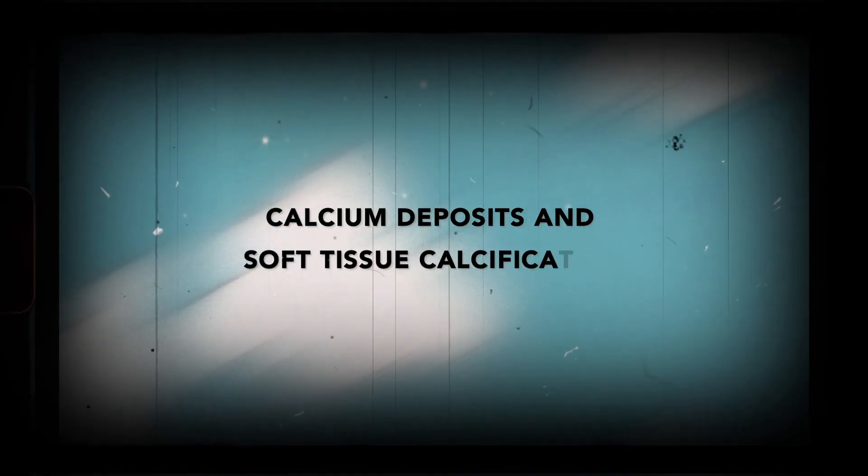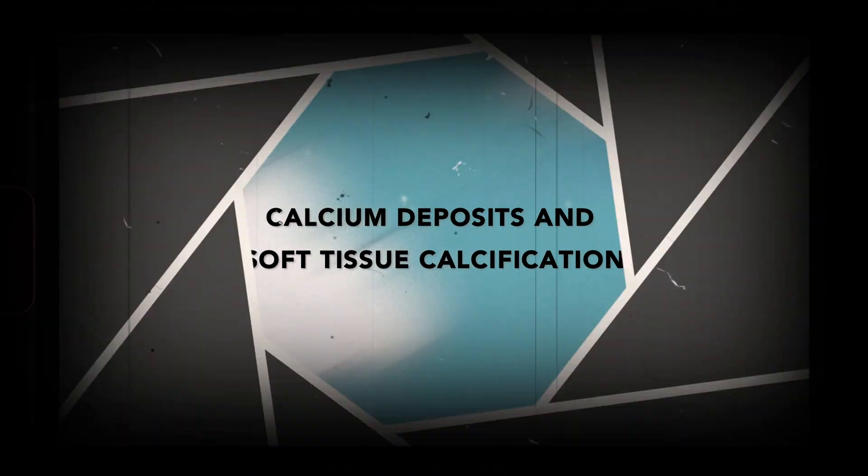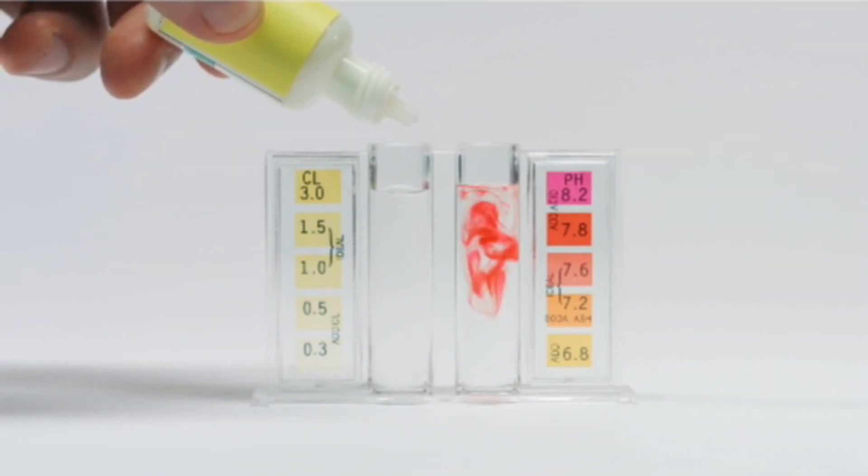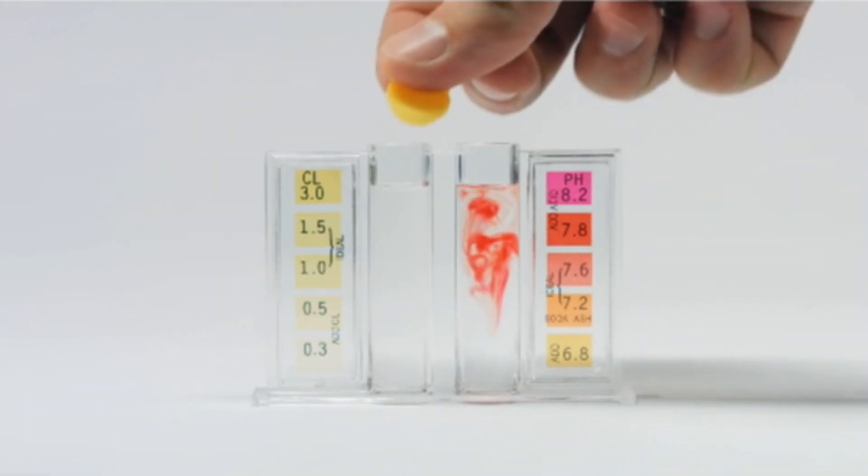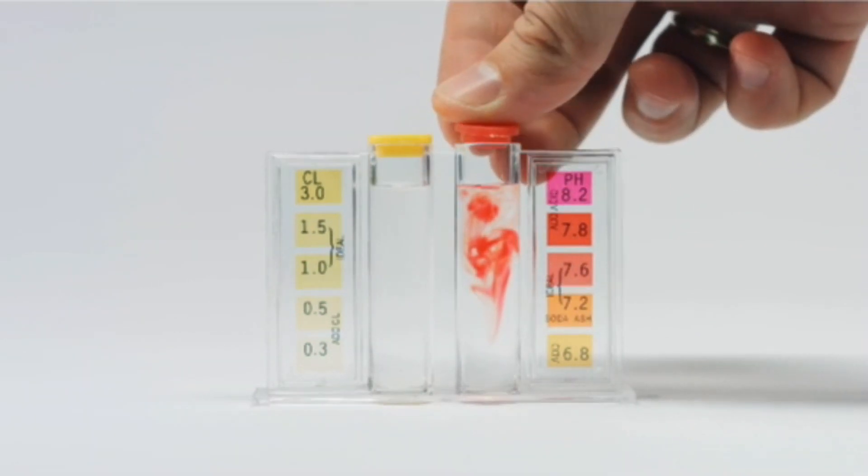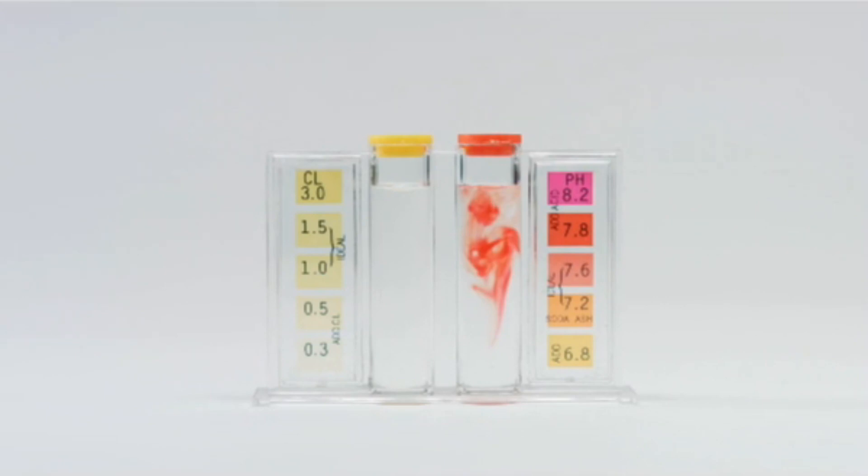Calcium deposits and soft tissue calcification: Another potential risk associated with megadosing on vitamin D3 is the accumulation of calcium in soft tissues, such as the heart, lungs, and blood vessels. This process is known as soft tissue calcification and may contribute to cardiovascular problems affecting overall heart health.